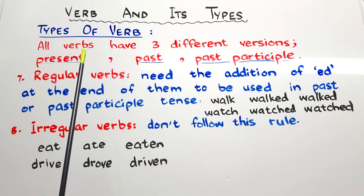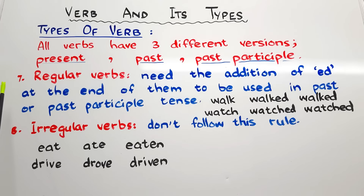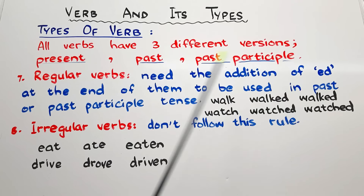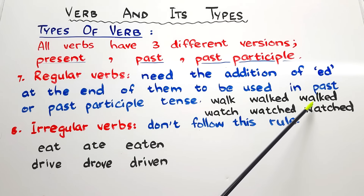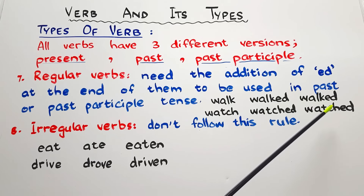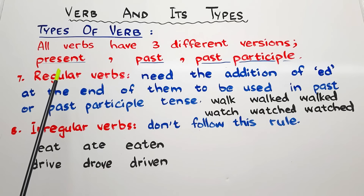All verbs have three different versions: present, past, and past participle. The seventh and eighth categories depend on this. At number seven we have regular verbs. Regular verbs need the addition of '-ed' at the end to be used in past or past participle tense. Like the verb 'walk' — past is 'walked,' past participle is also 'walked.' The verb 'watch' — past is 'watched,' past participle is also 'watched.' Verbs that follow this pattern are called regular verbs.